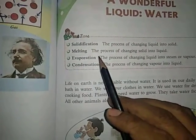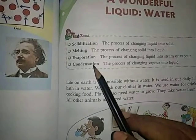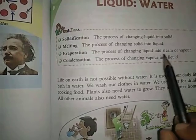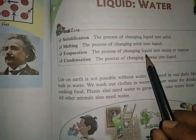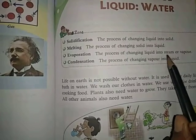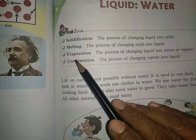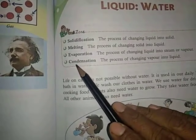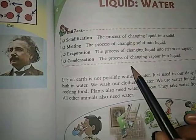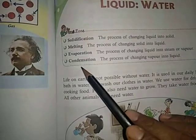Evaporation — the process of changing liquid into steam or vapor. Wo process jis mein liquid steam mein ya vapor mein change hota hai. Jab koi liquid jaise water steam mein change hota hai, usko hum vapor bolte hain aur ye process evaporation kehlata hai. Condensation — the process of changing vapor into liquid. Wo process jis mein vapor again liquid mein change hota hai usse hum condensation karte hain.